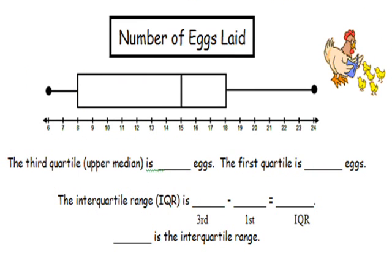Okay. Let's see if we can find the IQR of some more box plots. So here we have eggs laid. And the third quartile would be 18. The first quartile is 8. So the interquartile range would be 18 minus the first quartile. Your interquartile range would be 10.